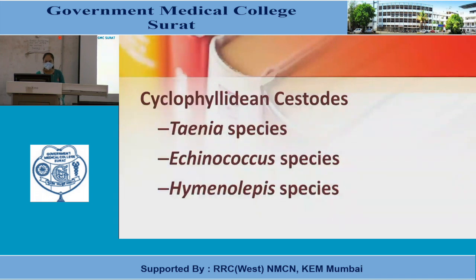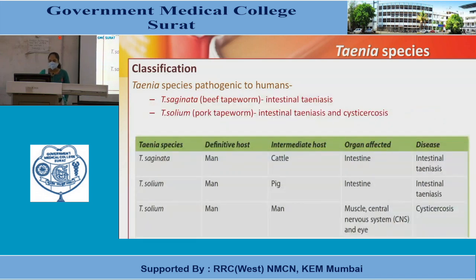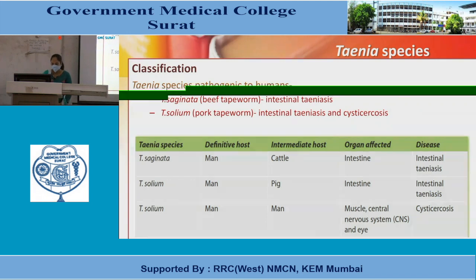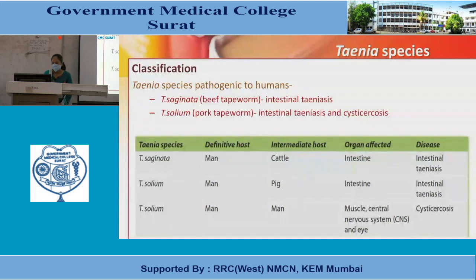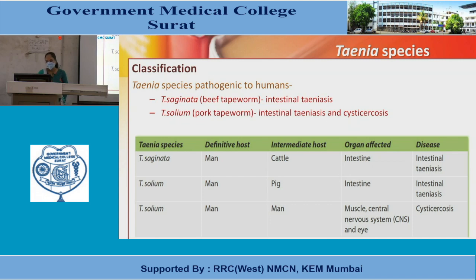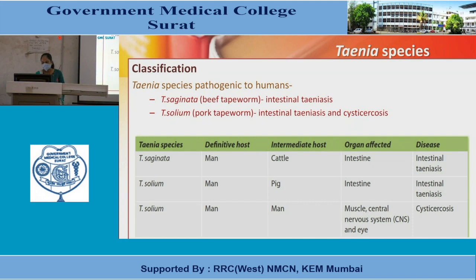Cyclophyllidian cestodes: Taenia species pathogenic to humans are two types — T. saginata (beef tapeworm, causing intestinal taeniasis) and T. solium (pork tapeworm, causing intestinal taeniasis and cysticercosis). Differences: T. saginata — definitive host is man, intermediate host is cattle, organ affected is intestine, disease is intestinal taeniasis. T. solium — definitive host is man; intermediate host may be pig or man. If intermediate host is pig, organ affected is intestine (intestinal taeniasis). If intermediate host is man, organs affected are muscles, CNS, and eye, causing cysticercosis.